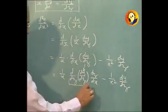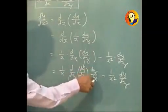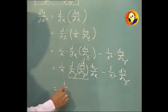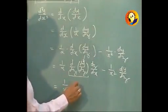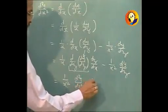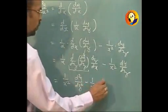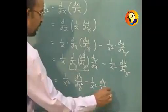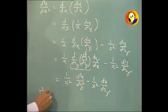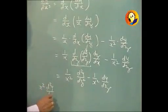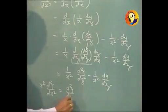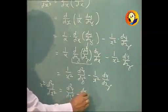Now this particular term is nothing but d²y/dz² and dz/dx we know that it is 1/x. So ultimately it will come out to be 1/x² × d²y/dz² - 1/x² × dy/dz. And if we multiply throughout by x² we will get x²d²y/dx² = d²y/dz² - dy/dz.